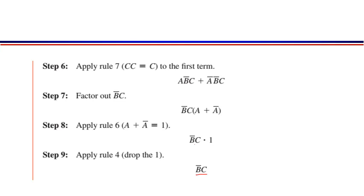Step number three mein jo second term thi woh zero ho gayi. Baqi jo do terms hain woh isi tarah likh li aur C multiply ho raha hai. Step number five mein C multiply hone par: AB'CC + A'B'C likha jayega. CC = C (rule number seven), toh AB'C + A'B'C. Is poori expression mein B'C common hai, toh (A + A') likh liya. A + A' = 1 (rule number six), toh B'C · 1 = B'C. Complex expression simplify hokar single term B'C ban gayi.